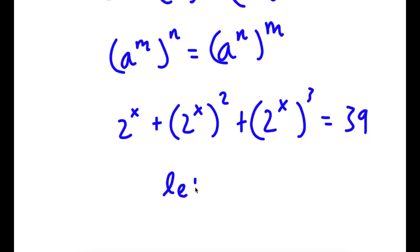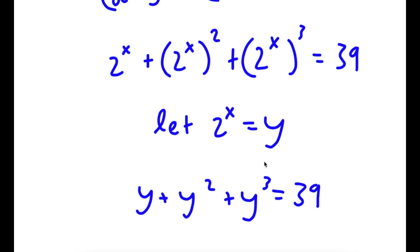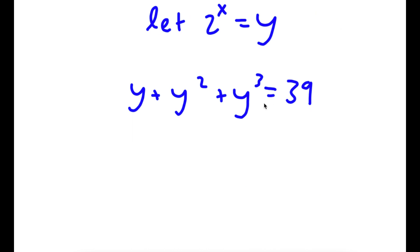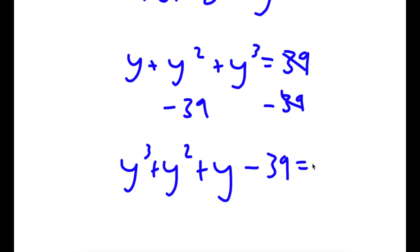Now I'm going to let 2 to the power of x equal to the variable y. So now I have y plus y squared plus y to the power of 3 is equal to 39. I'm going to subtract 39 on both sides, and now I have y to the power of 3 plus y to the power of 2 plus y minus 39 is equal to 0.